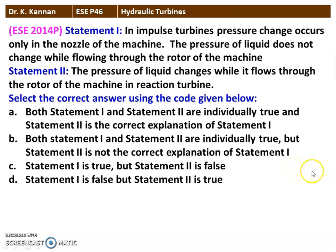The first question is from the 2014 question paper. There are two statements. Statement 1: In an impulse turbine, pressure change occurs only in the nozzle of the machine. The pressure of the liquid does not change while flowing through the rotor. This statement is true. The example of an impulse turbine is the Pelton turbine, where pressure drop takes place only in the nozzle, converting pressure into velocity, and the runner operates at atmospheric pressure. So pressure across the runner is constant.